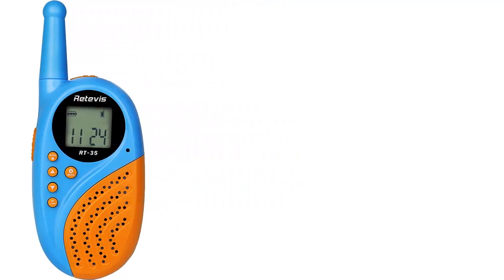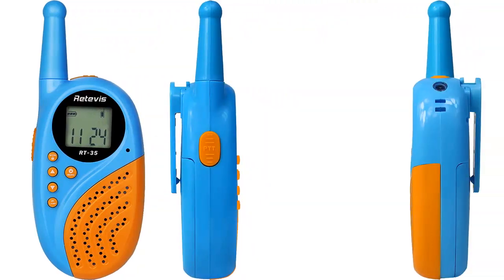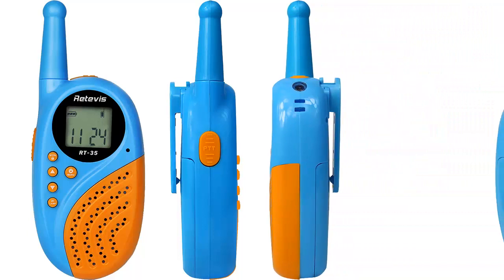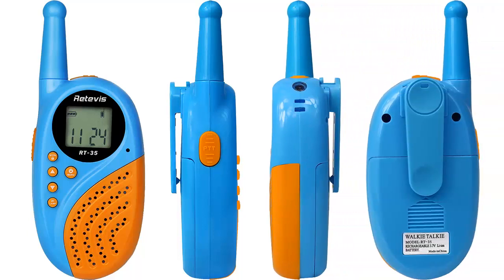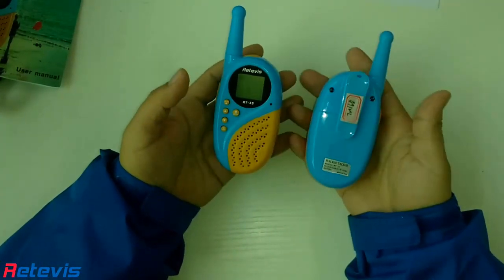RT35 is a mini-fashional design walkie-talkie. It has a fruity case and bright color, with frequency FRS/GMRS and PMR446. The LCD screen and 6 buttons make for clear display and simple operation with detailed functions.